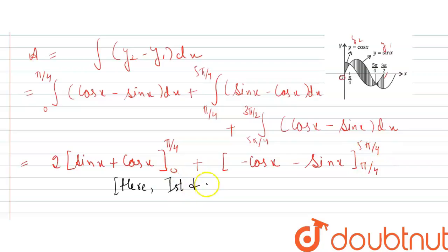And here, first and third integral are equal in magnitude. So it becomes 2 bracket sin x plus cos x, range from 0 to π/4.